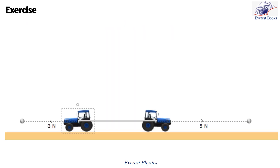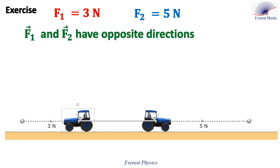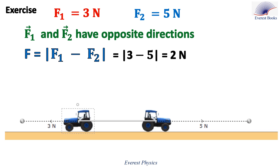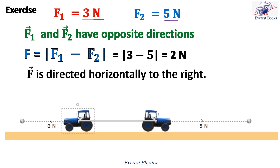Let's solve an application. Two tractors are connected by a rope. The right tractor exerts a force F2 directed horizontally to the right on the rope, while the left tractor exerts a force F1 directed horizontally to the left on the same rope. The magnitude of F1 equals 3 newtons, while the magnitude of F2 equals 5 newtons. Find the magnitude and the direction of the resultant force F acting on the rope. Since F1 and F2 have opposite directions, the magnitude of the resultant force F is the absolute value of F1 minus F2, which equals the absolute value of 3 minus 5, equal to 2 newtons. Since the magnitude of F2 is greater than that of F1, F is directed horizontally to the right as that of F2.